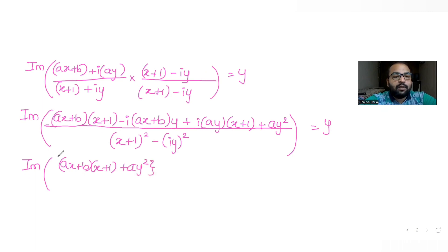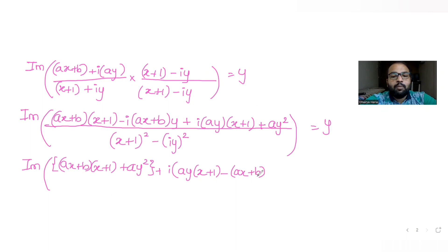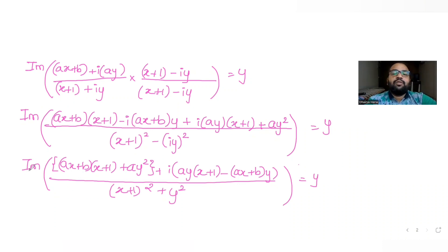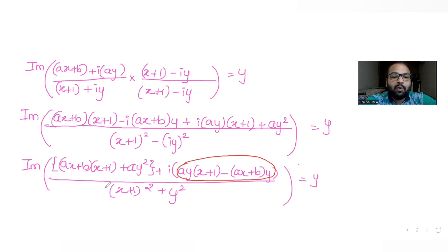So the full expression is the imaginary part of [(ax + b)(x + 1) + ay²] plus i[ay(x + 1) − (ax + b)y], all divided by (x + 1)² + y², equal to y. Since we only need the imaginary part, we can neglect the real part of this expression.